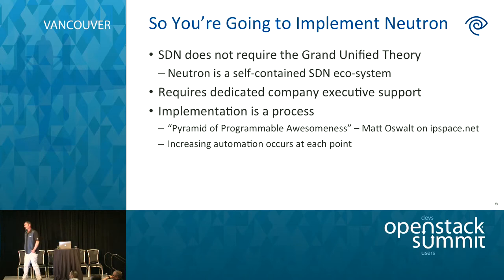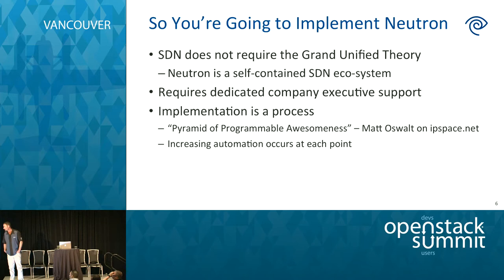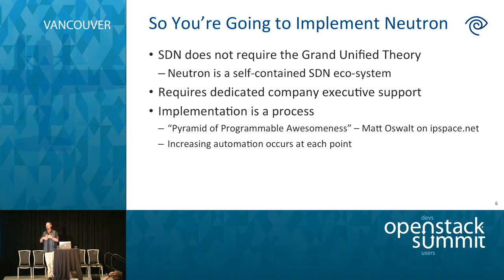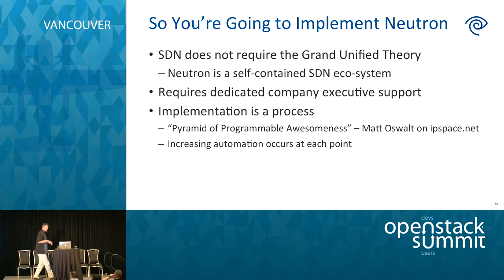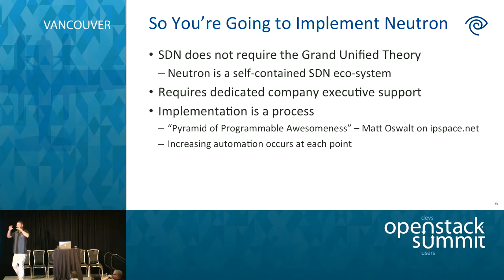Moving to SDN and even to Neutron is a process. If you haven't gone online to ipspace.net, there's a really cool video by Matt Oswald that talks about the pyramid of programmable awesomeness. It's a good way to frame thinking about implementing SDN and automation in your networks. He starts at the bottom of the triangle and talks about provisioning — have a process for provisioning, a process for configuring, then go to full programmability. SDN is at the end of this process, not at the beginning. Don't try to boil the ocean.